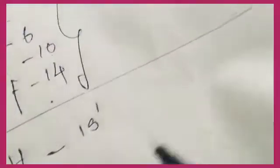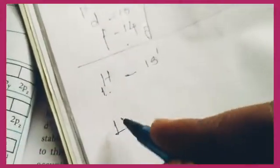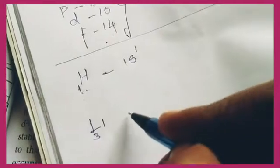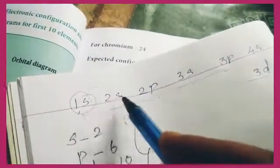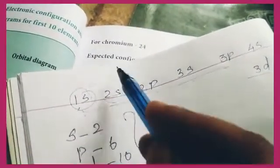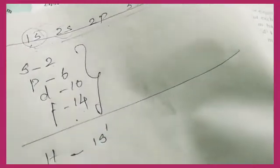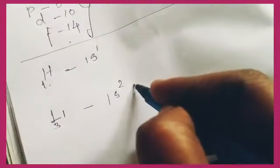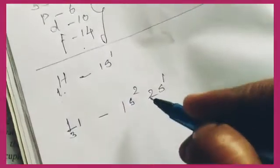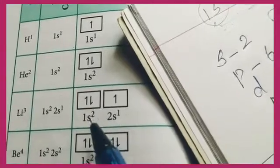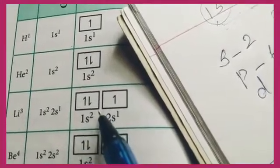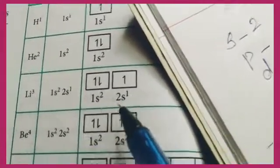Next is lithium. The atomic number of lithium is 3, so we have 3 electrons. The first two electrons fill the 1s orbital: 1s². The third electron goes into the 2s orbital: 2s¹. So the electronic configuration of lithium is 1s²2s¹. In the orbital diagram, the 1s box is full with 2 electrons and the 2s box has 1 electron.